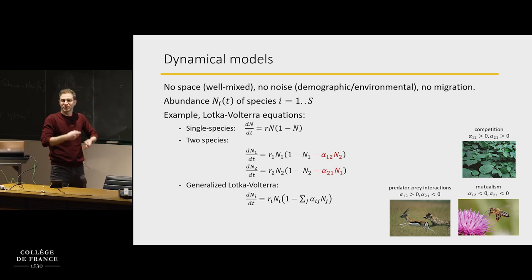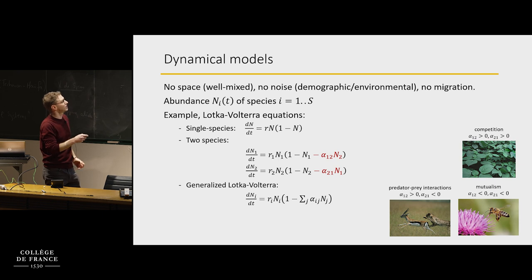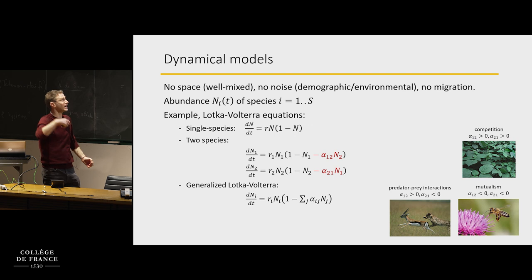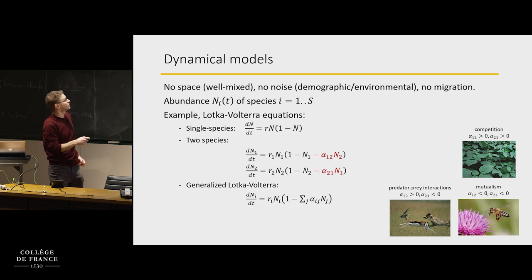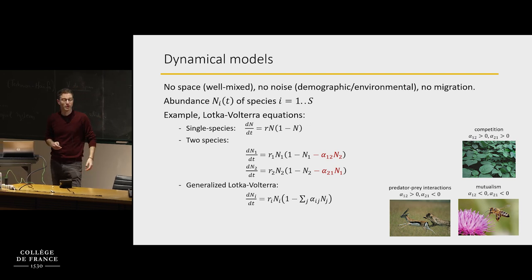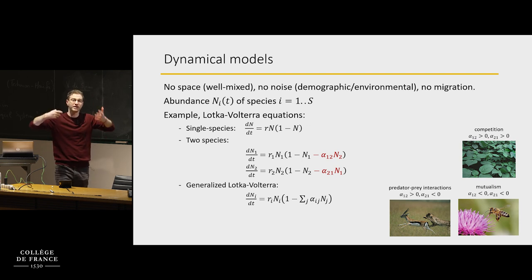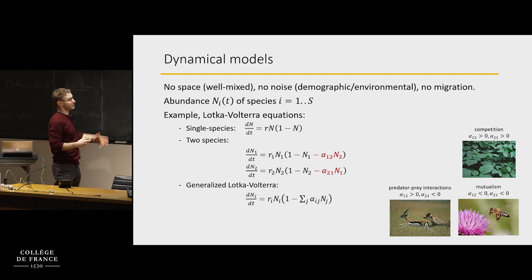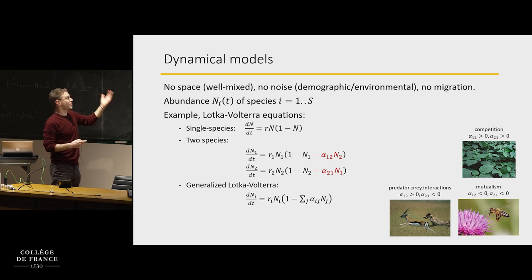You can do this for any number of species — you add one such term for each additional species that interacts with species one. You get the generalized Lotka-Volterra equations, which are S coupled non-linear differential equations.